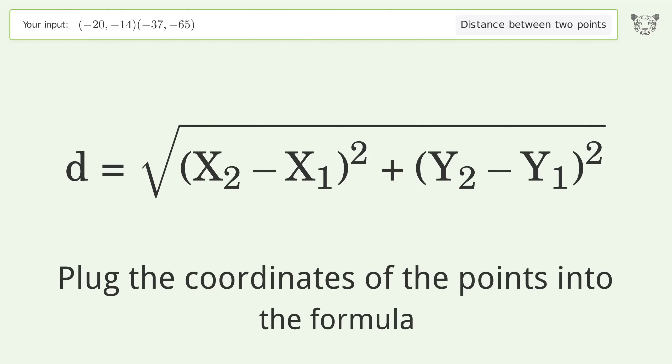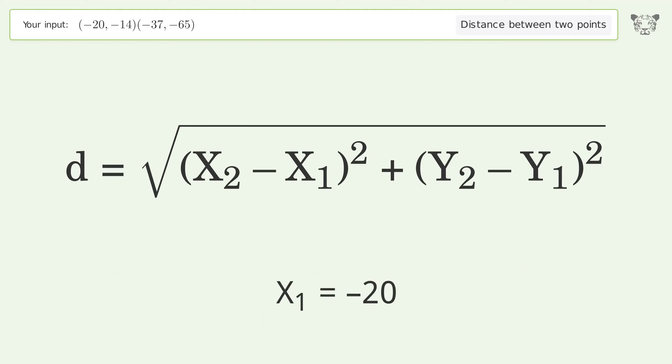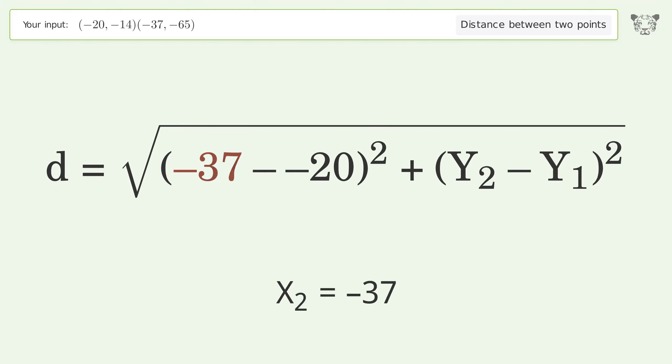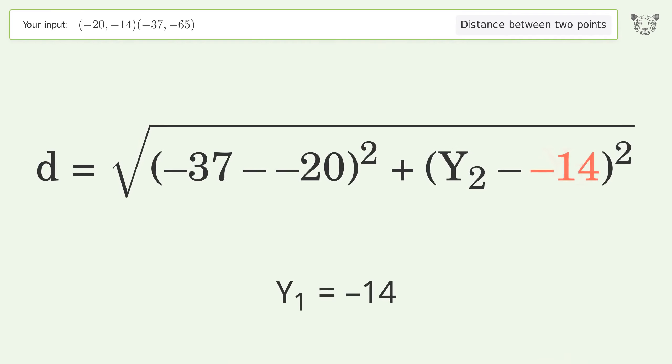Plug the coordinates of the points into the formula: x₁ equals negative 20, x₂ equals negative 37, y₁ equals negative 14, y₂ equals negative 65.